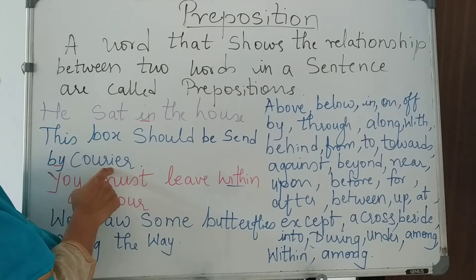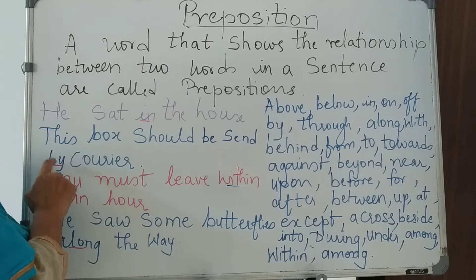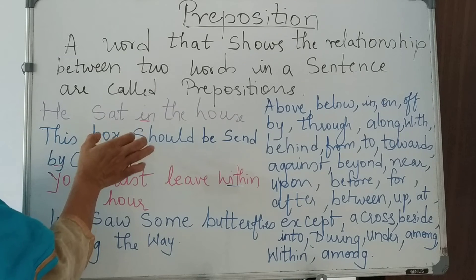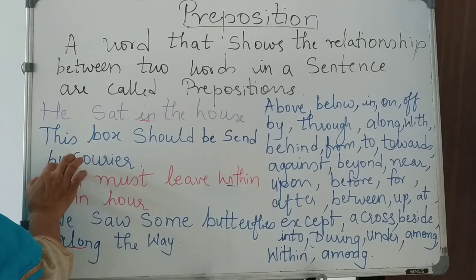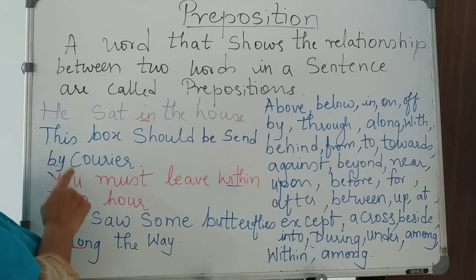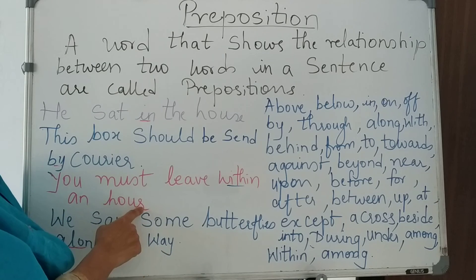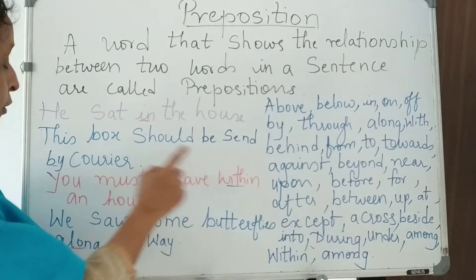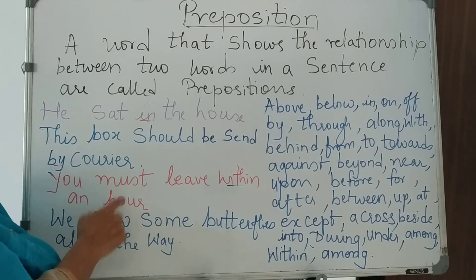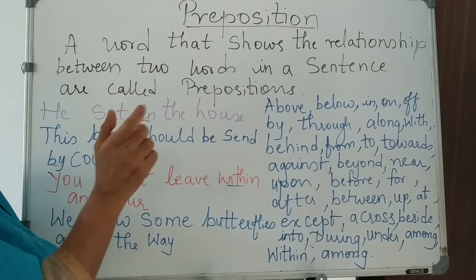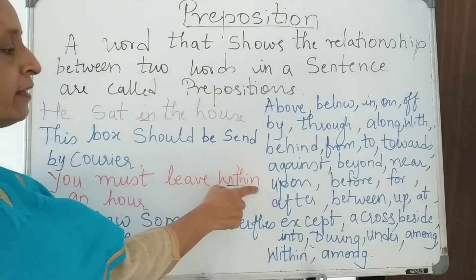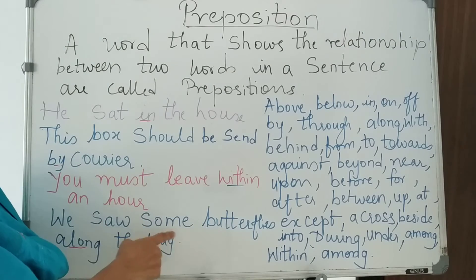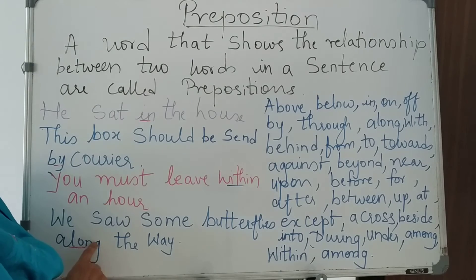This box should be sent by courier. Now 'by' is a preposition — it shows the relationship of the box and how it has to be sent by courier. You must leave within an hour — so here 'within' is a preposition, showing you are leaving within a time of an hour. We saw some butterflies along the way — 'along' is the preposition.